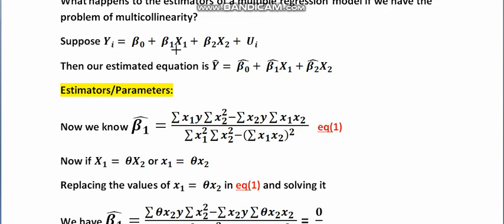Now, suppose these two variables x1 and x2 are related to each other in some way. Let's say x1 is related to x2 by some parameter theta. Taking the deviated form, since we estimate parameters in deviated form, if small x1 equals theta times x2, then we are going to check what happens to our estimators when we have this kind of relationship between the two independent variables.